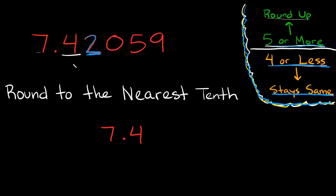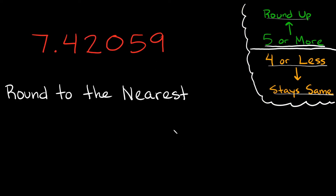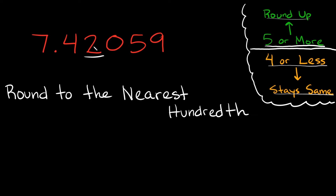Since we're rounding to the tenths spot, we keep the tenths spot but drop everything that comes after it. Now let's switch this up a little bit. Let's say we were asked to round to the nearest hundredth. Where is the hundredths place? Well, this is the ones, the tenths, and then this is the hundredths. So if we're rounding to the nearest hundredth, this two right here is either going to stay as a two or we're going to round it up to a three.